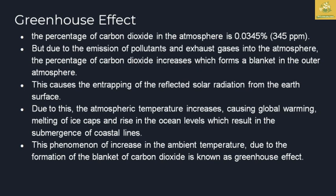Inside the greenhouse, the carbon dioxide percentage is 0.0345%, which is 345 ppm at the atmosphere level. Due to emission of pollution and exhaust gases, the percentage of carbon dioxide increases in the controlled environment, forming a blanket from the outer atmosphere. This causes entrapment of reflected solar radiation from the earth's surface, causing atmospheric temperature to increase, leading to global warming, melting of ice, and rise in ocean levels, resulting in submergence of coastal areas. This phenomenon of temperature increase due to the blanket of carbon dioxide is known as the greenhouse effect.